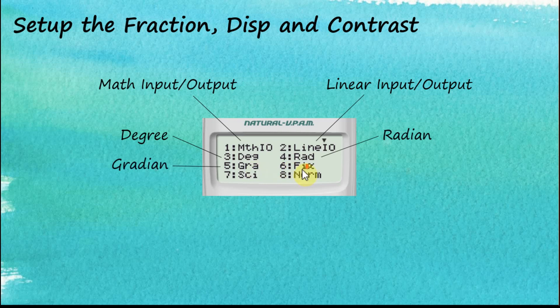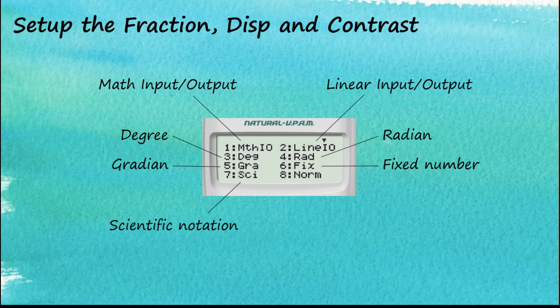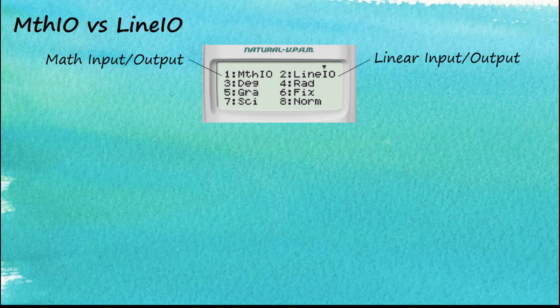After that we have Fixed number, which tells the calculator how many decimal places to display. Number seven is Scientific Notation, where we tell the calculator how many significant figures we want for our answer. Number eight is Normal — if you have set your calculator to fixed or scientific notation and want to change it back to normal numbers, this is where you do that.